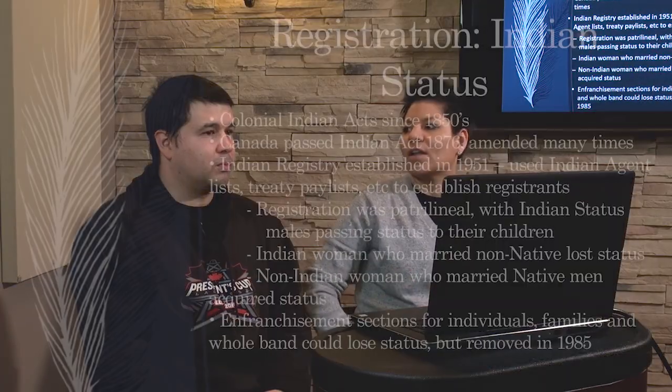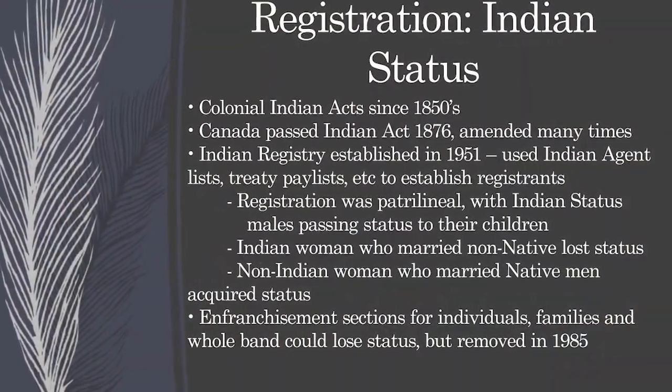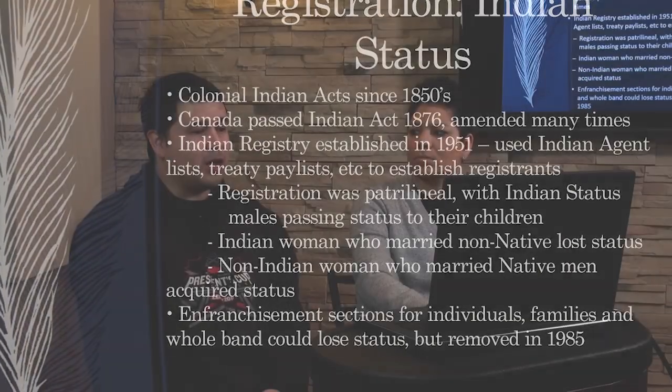There were also enfranchisement sections for individuals or families — a head of household could disenfranchise his wife and children. There was voluntary and involuntary enfranchisement, and a whole band could lose status. They removed all of that when they passed C-31 in 1985. Enfranchisement was voluntary in the 1850s, but enforced from 1876. If you were in the armed forces, you would lose your status. If you wanted to become a doctor, lawyer, or professional, you would lose your status. If you lived off the reserve for five years, there were so many ways to lose status and become enfranchised.